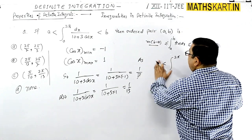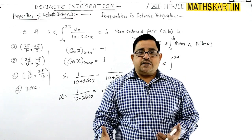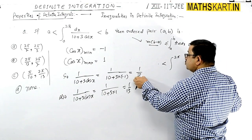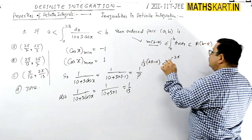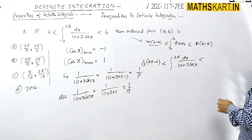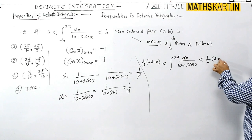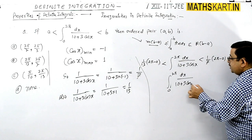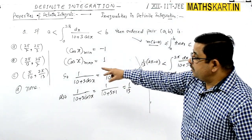This value is 1 by 13. You can use this direct formula. You can directly put the values. The smallest value we found — 1 by 13 is the smaller number, so this number is bigger. And place the limits: this is 2 pi minus 0. You can put the whole function here: integral of dx upon (10 plus 3 cos x), and it is less than capital M, which means 1 by 7. And 2 pi minus 0. The value from 0 to 2 pi of dx upon (10 plus 3 cos x) will lie between 2 pi by 13 and 2 pi by 7.